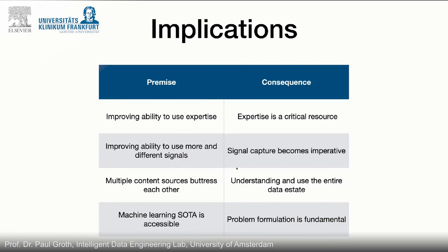The other premise is that multiple context sources buttress each other. It's really important to understand and use the entire data estate. As we improve machine learning models that use all these content sources, it's really important to have your data in order so you can apply these things. And lastly, I think it's often thought you need a lot of effort to access the state-of-the-art in machine learning. What I hope I showed is that with transfer learning — the ability to reuse these large openly published models — we're able to apply that today. That means the kind of work around problem formulation — figuring out where this works in a clinical setting — becomes even more important.